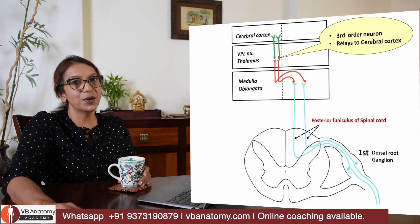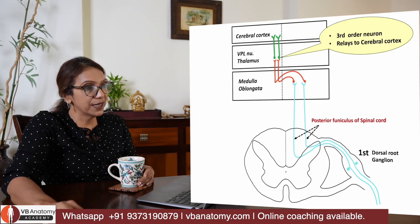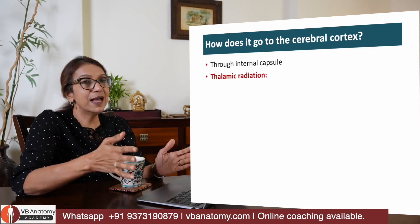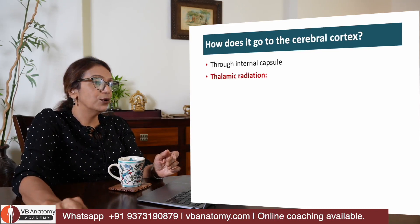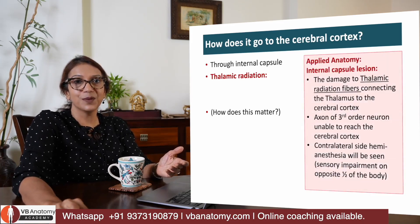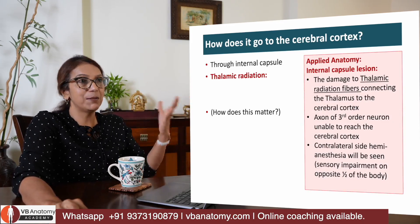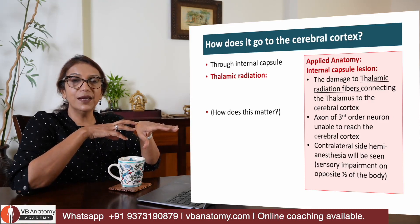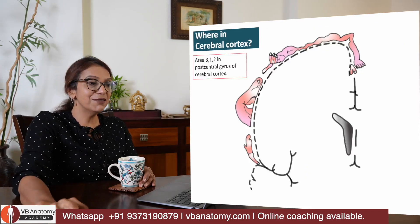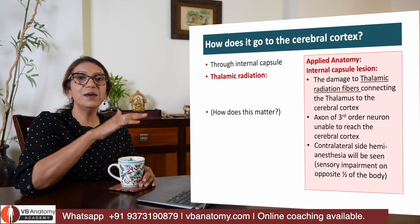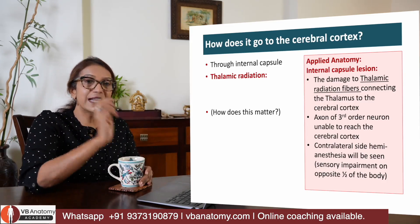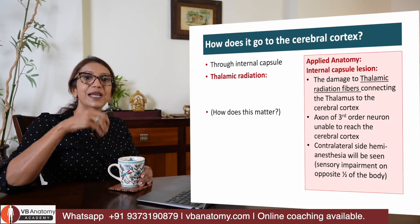The third order neuron carries sensation from the VPL nucleus of the thalamus to the cerebral cortex. As it ascends from the thalamus, it forms what is called the thalamic radiation, which passes through the internal capsule. If there is an internal capsule lesion, the thalamic radiation may be damaged, and the fine touch sensation — carried all the way to the thalamus — can no longer reach the cerebral cortex. This results in hemi-anesthesia. That is why you need to know the tract along its entire path, not just its endpoint.